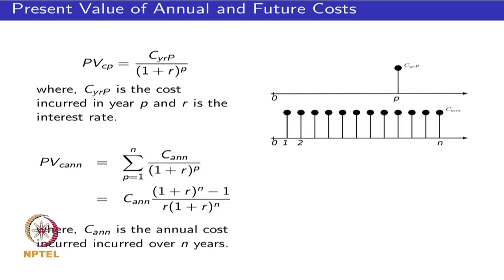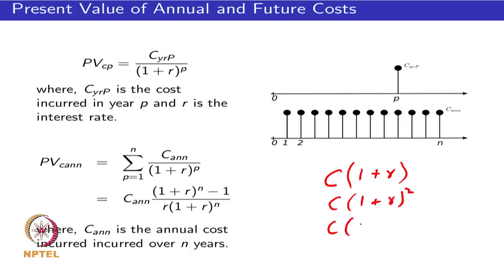One way to handle future costs: if you have some amount C at the end of one year and your interest rate is R, you will have (1+R)·C at the end of two years, and C·(1+R)^N at the end of N years. So if a cost is incurred at year P, its present value today is C_P divided by (1+R)^P. Any future expense can be reflected back to its present value.